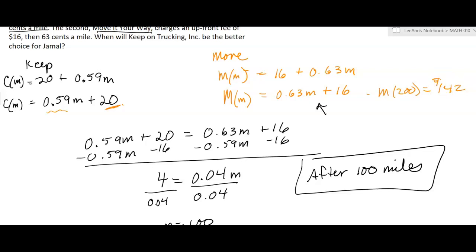Now, what happens over here with C of 200? So same mileage, right? So we're thinking this is going to be cheaper, right? So 0.59 times 200 plus $20. And it's only $138. So yeah. And the cutoff was at 100 miles. You find that by setting the two functions equal to each other.